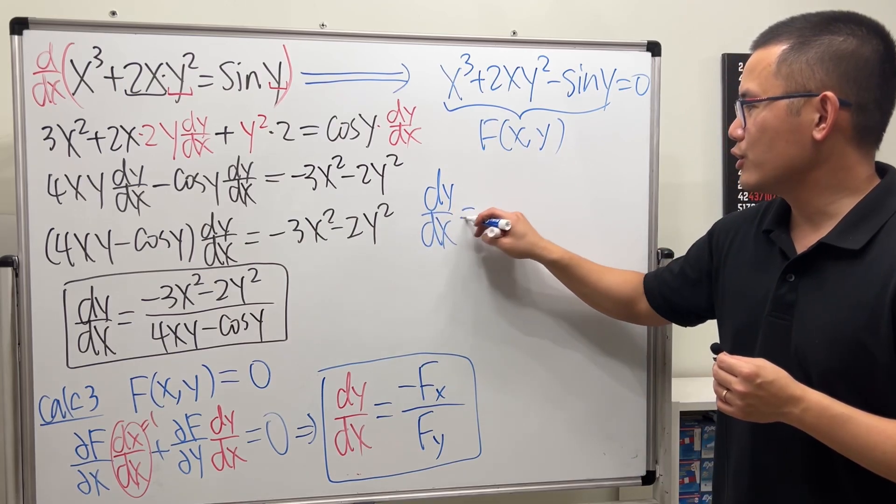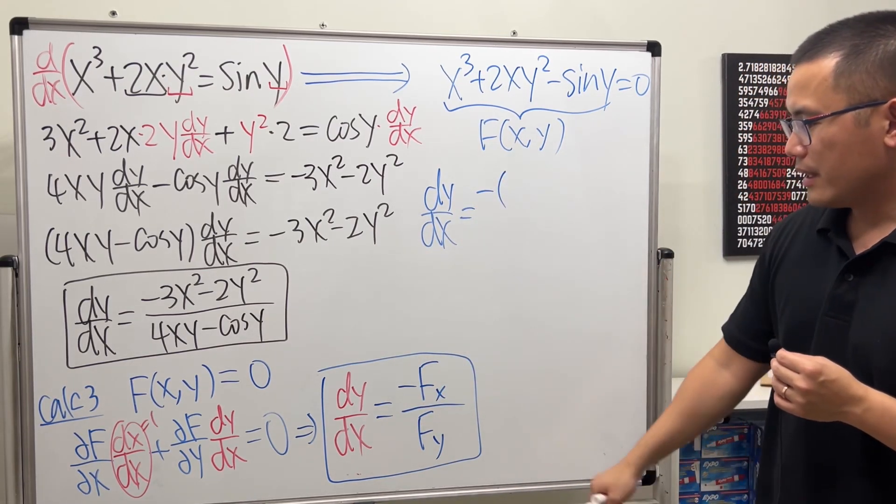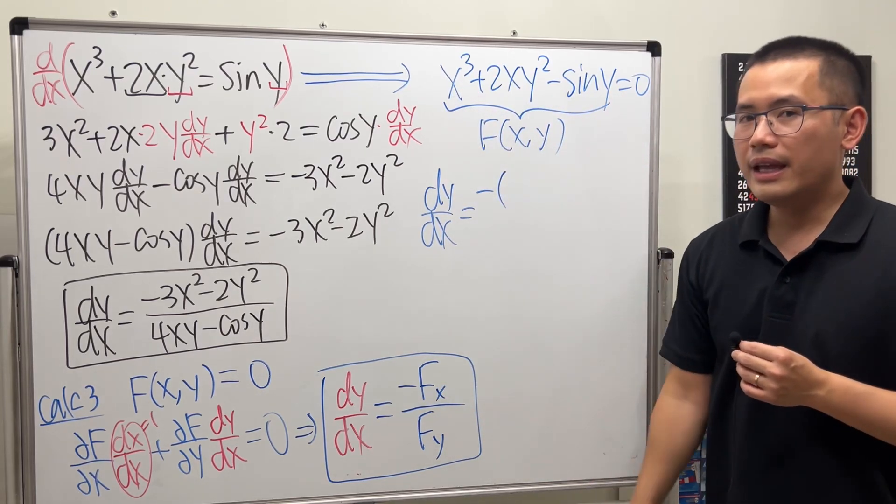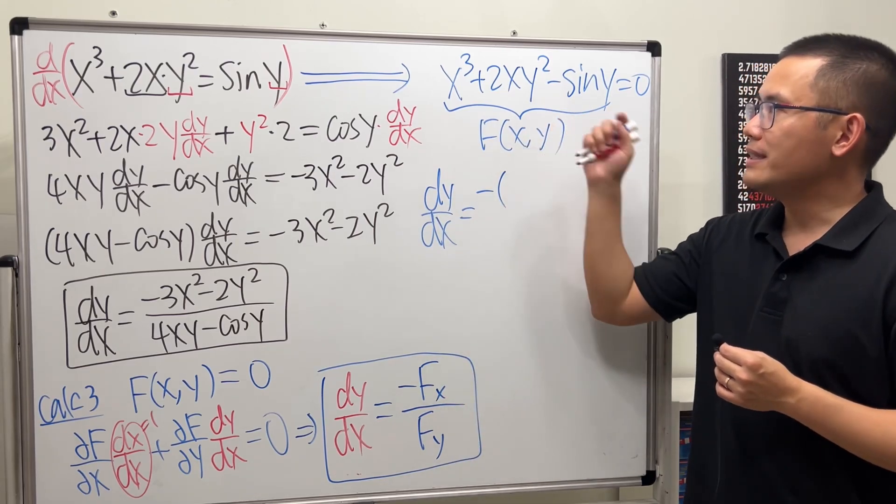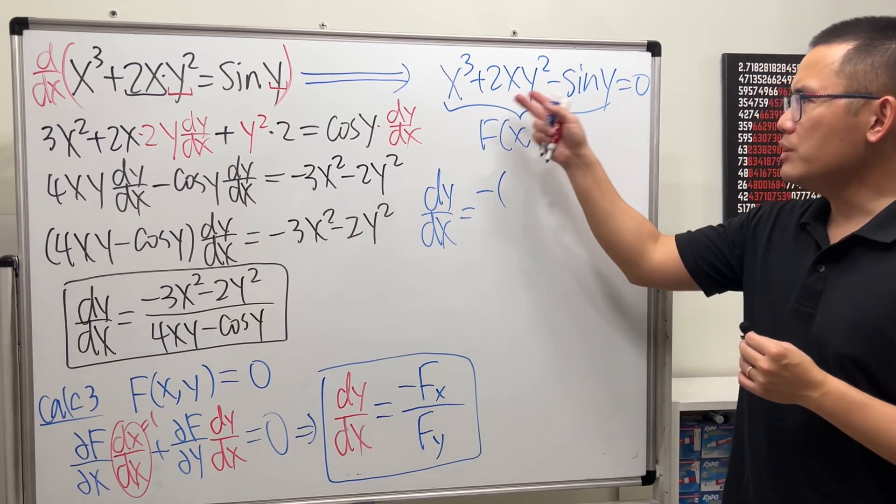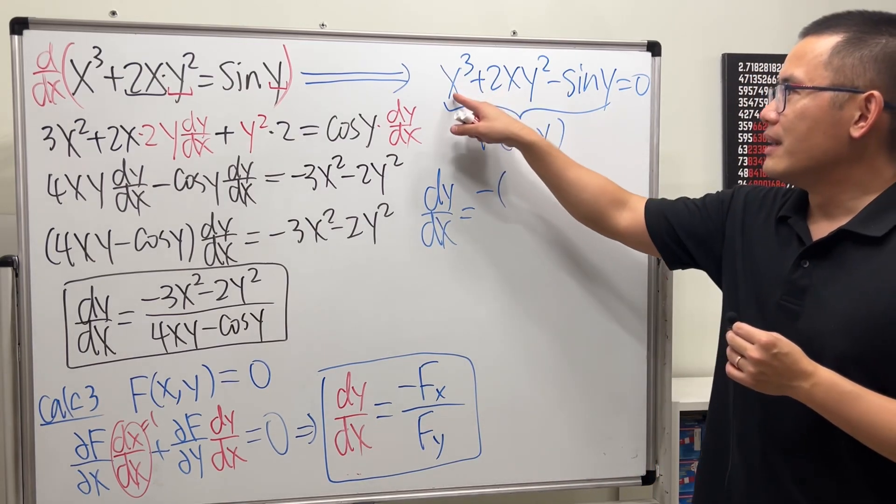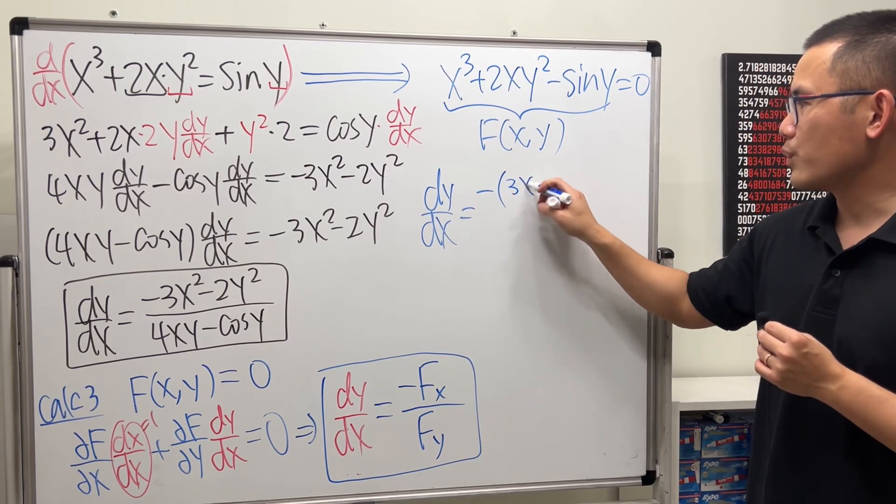Dy/dx is going to be the following. We will have a negative. This notation means look at this function, and then we will take the derivative with respect to x, meaning y is just a constant. So we don't need to use the Product rule at all. Very nice, huh? Now, derivative of x to the third power with respect to x, we get 3x squared.